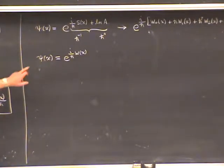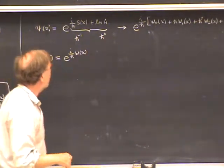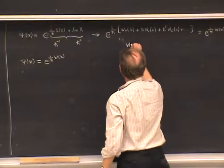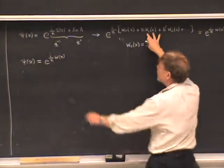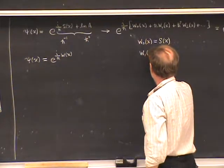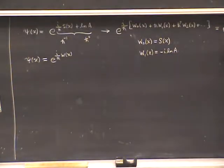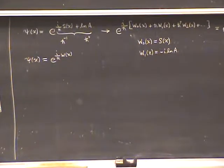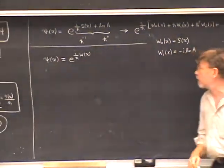Let me call the entire exponent w(x), so that ψ(x) = e^(i w(x)/h-bar). This becomes a definition of w. Comparing with the series, w₀ is the same as s. And w₁ equals minus i times log(A). There are higher-order corrections too, which are further refinements on the original WKB ansatz. The next step is to take this expression for ψ and plug it into the Schrödinger equation to get equations for both A and s.